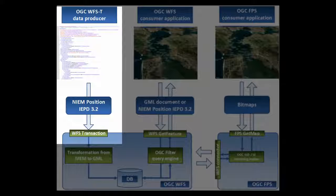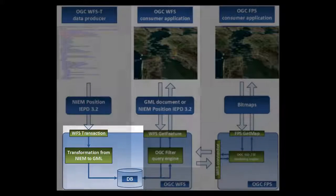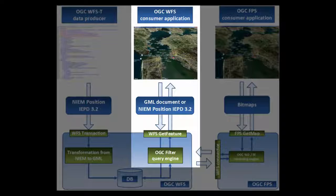Through a Web Feature Service transaction request, users can add data in the NIEM Position IEPD representation. When the data arrives in the Web Feature Service, it is transformed to a GML application schema based on that IEPD and stored in a database. After that, users can query the data following the GML application schema.